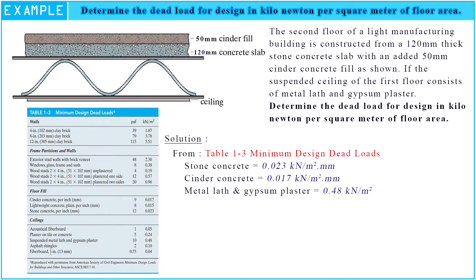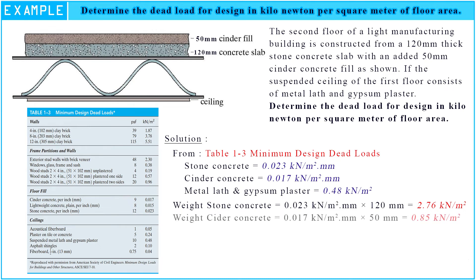Hence, we multiply the minimum design dead loads of floor fill stone concrete with the thickness of our slab. The weight of the stone concrete slab is 2.76 kN per square meter. The weight of the cinder concrete fill on slab is 0.85 kN per square meter. And the weight of the ceiling suspended metal lath and gypsum plaster is 0.48 kN per square meter.